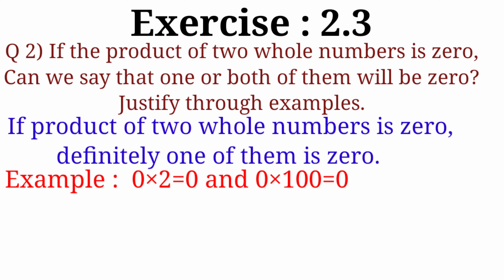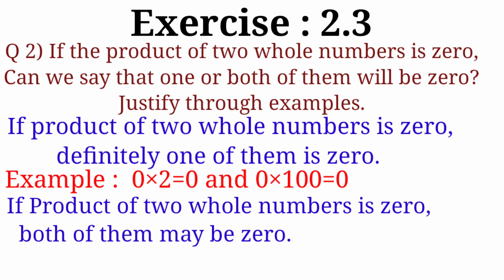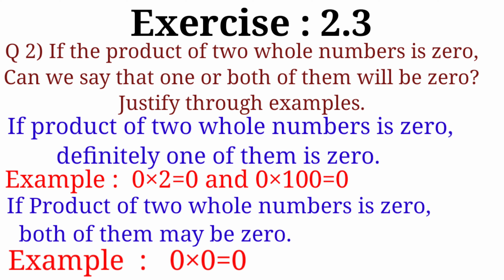Now the second condition: if the product of two whole numbers is zero, both of them may be zero. It is also possible that if the product is zero, both the multiplicand and multiplier are zero. For example, 0 × 0 = 0. So the conclusion is: if the product of two whole numbers is zero, then one or both of them will be zero.